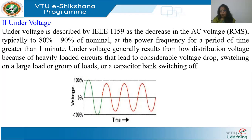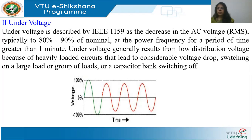Under voltage is the reverse. The IEEE 1159 standard defines under voltage as a decrease in the RMS value to between 80 to 90 percent (0.8 to 0.9 per unit), persisting for more than one minute. It generally occurs on the low-voltage distribution side because of heavily loaded distribution systems drawing large currents, causing feeders to experience larger voltage drops.